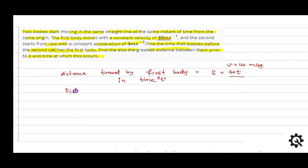Half at squared, so here we get 4 meters per second squared acceleration, so here we get 2t squared. When the second body catches the first...